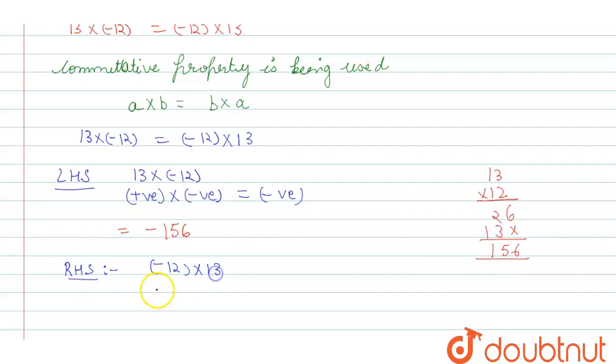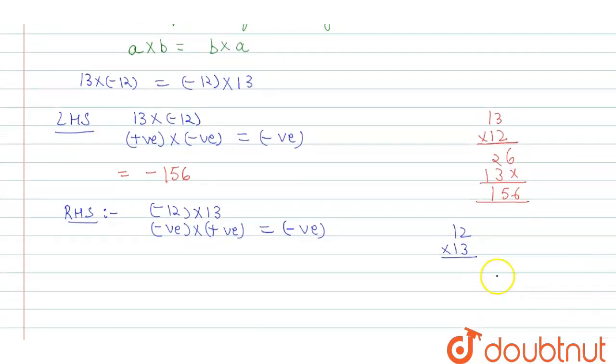Now right hand side: we have (-12) × 13. So whenever a negative number is multiplied by a positive number, the answer will always be negative. So 12 × 13: 3 × 2 are 6.